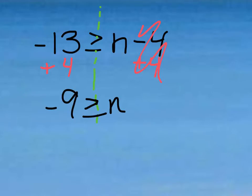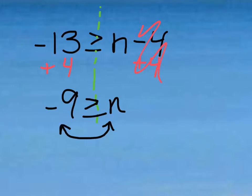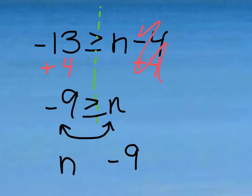Now this is actually a really bad way to leave an answer — it's confusing to read, and it makes a lot more sense and is easier to graph if our variable is on the left side. So the trick here is to switch the places of both our number and our variable. I'm going to move n to this side and negative 9 to this side. When you do this, the inequality switches direction — before it was greater than or equal to, so now it's going to be less than or equal to.